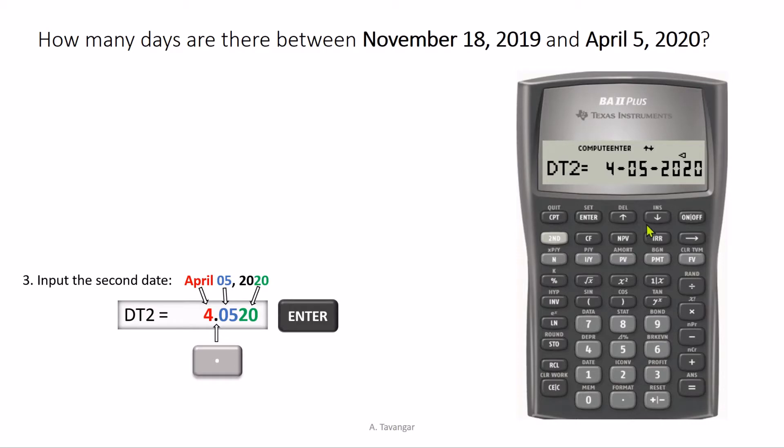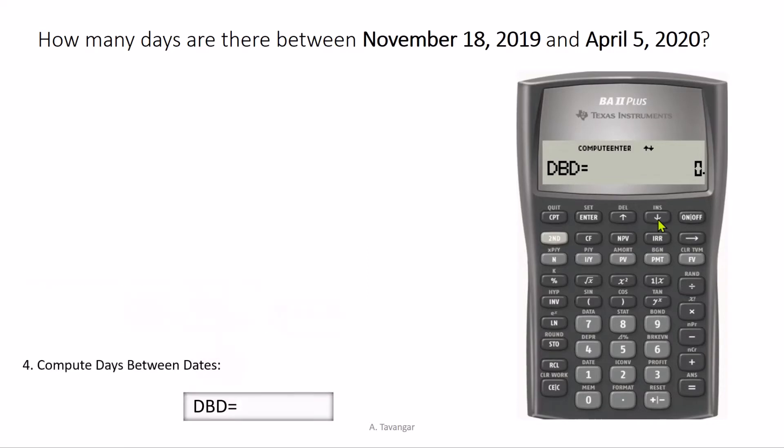Now we move down using the down arrow again to DBD. DBD represents days between dates. That's what we are to compute. So now all we need to do is just press CPT.